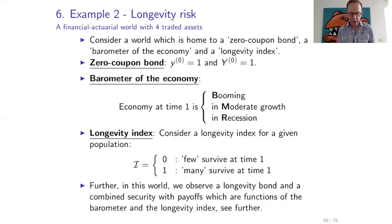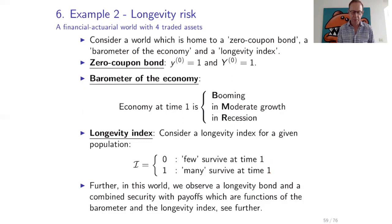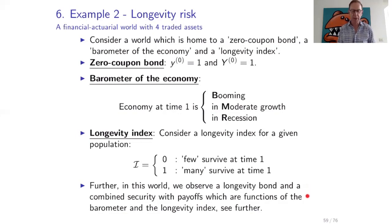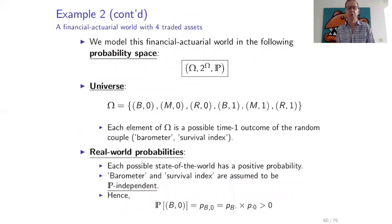There is also a longevity index for a given population which can only take the values zero and one. It takes the value zero if few survive at time one, and the value one if many survive. We do not precisely define few or many — let's take them very generally. Further in this world we also observe a longevity bond and a combined security with payoffs that are functions of the barometer and the longevity index, which we will see on the next slide.